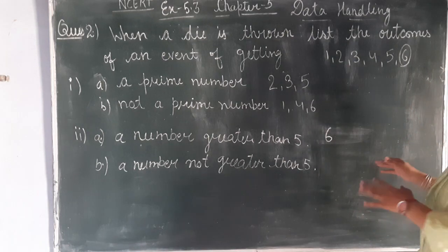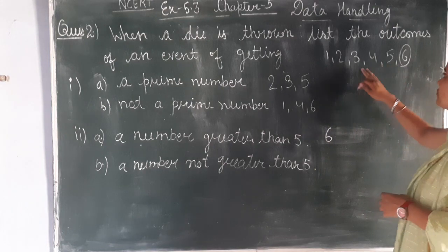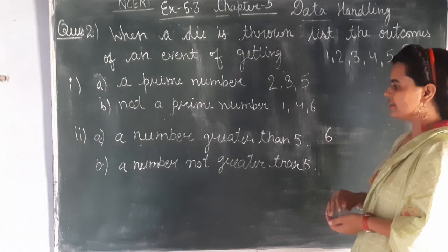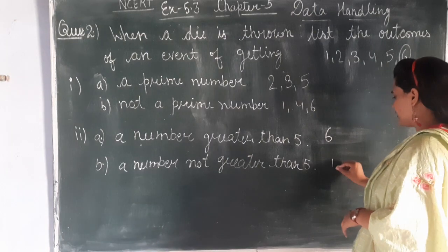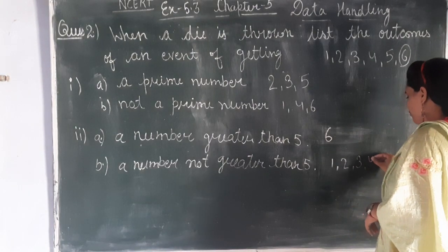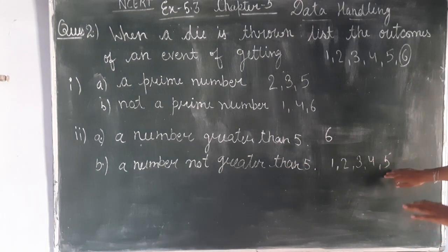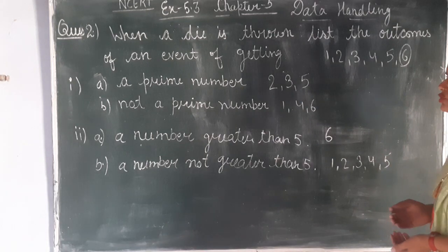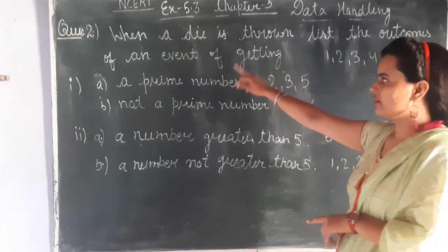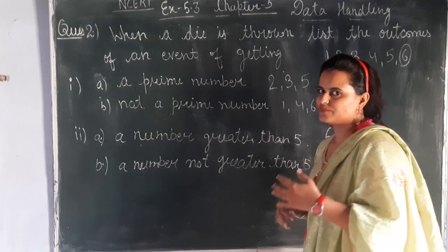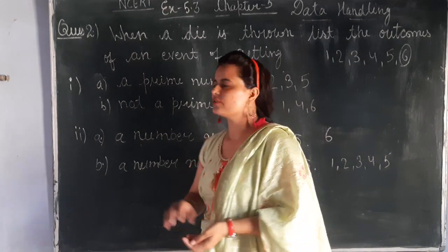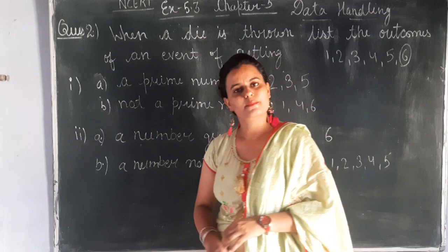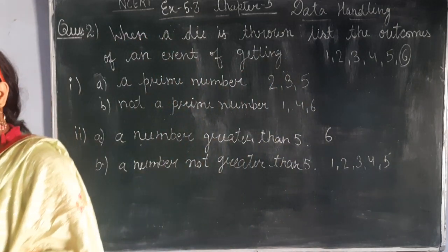For a number not greater than five: the numbers that are not greater than five — one, two, three, four, and five. Note that five is also an outcome here since the question says 'not greater than five,' not 'greater than five.' So your today's question is: tell about what you mean by an event, prime numbers, and composite numbers. Write in as much detail as possible, because writing helps our recalling power.